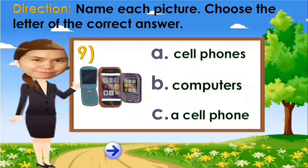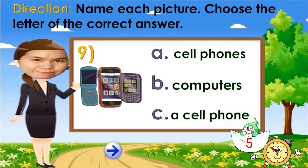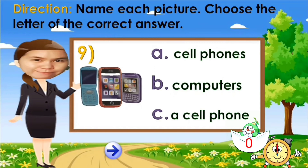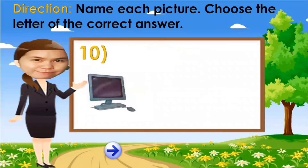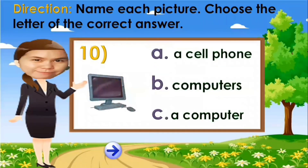A. Cell phones. B. Computers. C. A cell phone. Your time starts now. Time is up. The answer is letter A: cell phones. And the last one — A. A cell phone. B. Computers. C. A computer. Time is up. The answer is letter C: a computer.